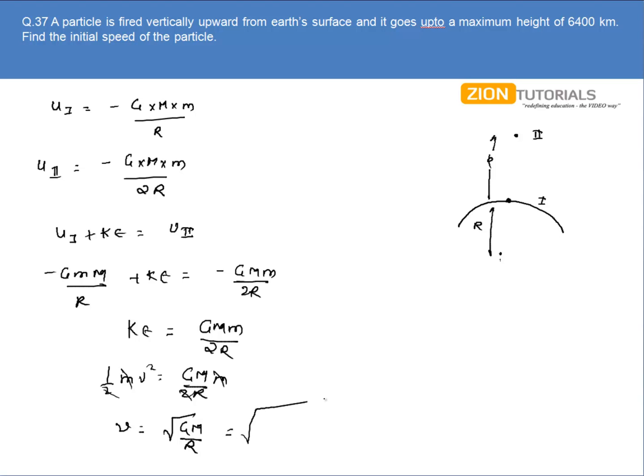Let's substitute the values. The value of G is 6.67 times 10 to the power minus 11, mass is 6 times 10 to the power 24, divided by the radius that is 6400 times 10 to the power 3. So it comes out to be about 7.9 km per second. That is the answer.